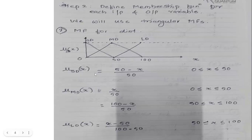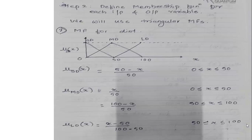For medium dirt, one line increases from 0 to 1 and another decreases from 1 to 0 on the y-axis, so there are two line equations. For the range 0 to 50: x / 50. For the range 50 to 100: (100 − x) / 50. For large dirt, x is in the range 50 to 100, giving the equation (x − 50) / (100 − 50), that is (x − 50) / 50.